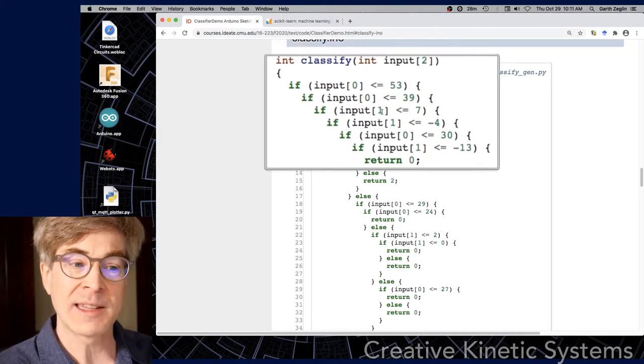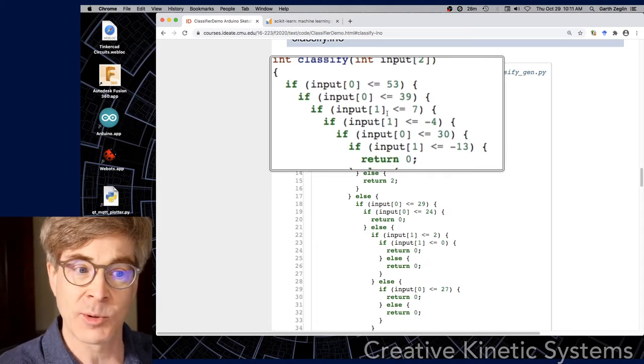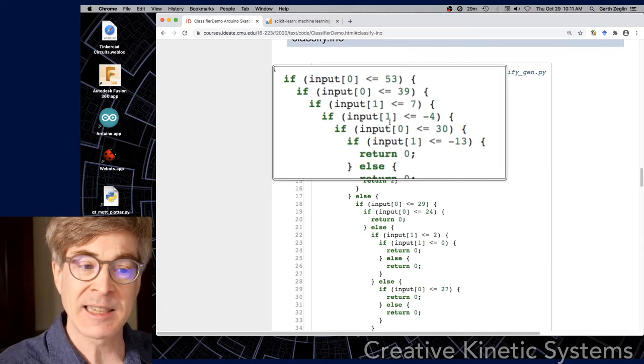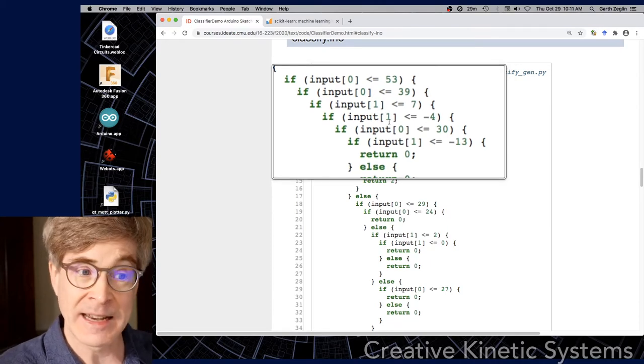So what we see is the code itself is a long series of if-else statements with less than or equal operators. And in some leaf nodes of this tree, some clauses, it'll return an index.